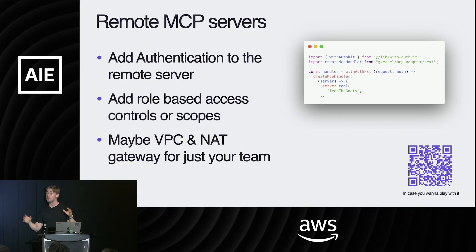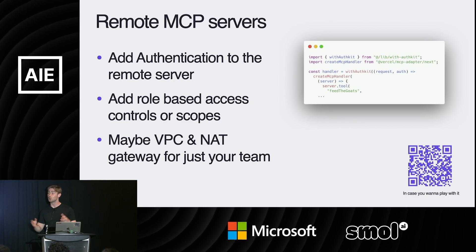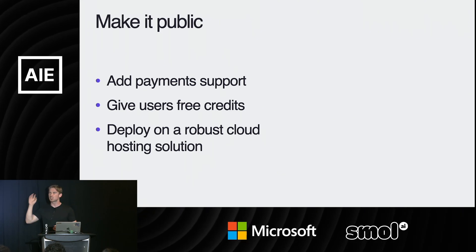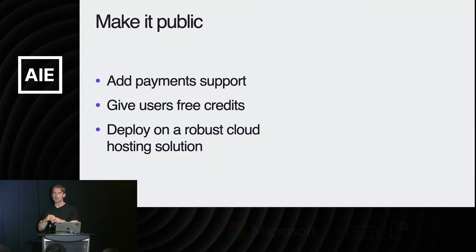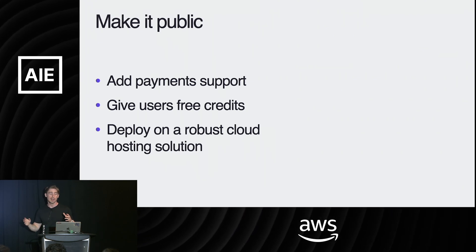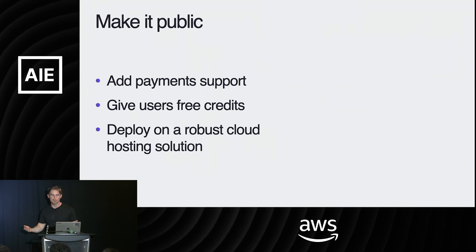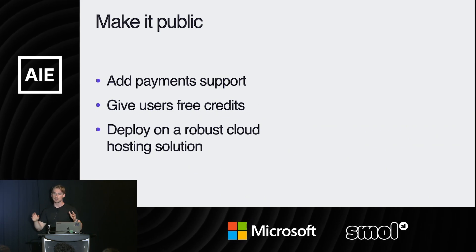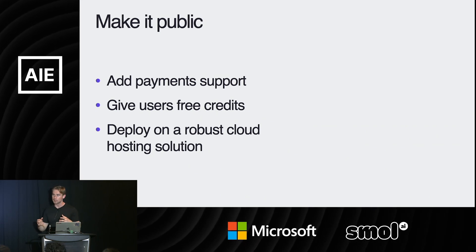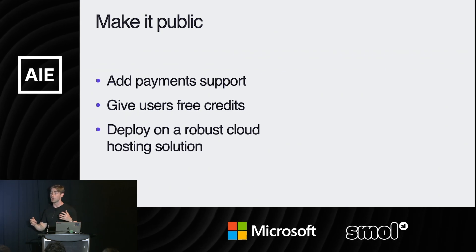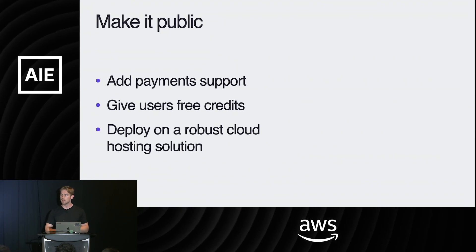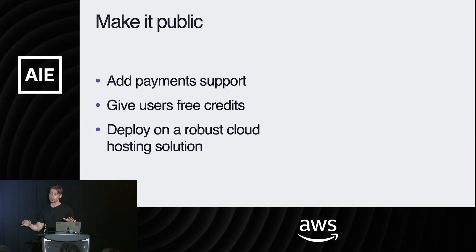Turns out everyone in your organization loves your goat emotional support tool. So you do what anyone would do — you make it public. You make a public MCP server that people can add to their code and build applications on top of. You add Stripe for payment rails, give some users free credits, and put it on a cloud hosting solution. Tons of those are spinning up — fundamentally MCP servers are just a normal workload, so cloud hosting providers can support whatever you need.